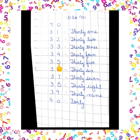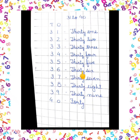35: THIRTY (T-H-I-R-T-Y) + FIVE (F-I-V-E) = 35. 36: THIRTY (T-H-I-R-T-Y) + SIX (S-I-X) = 36.